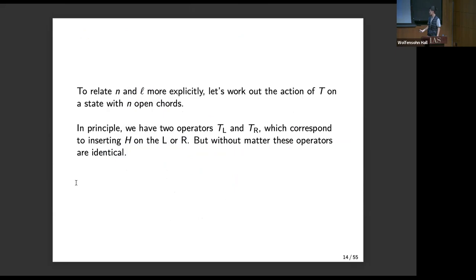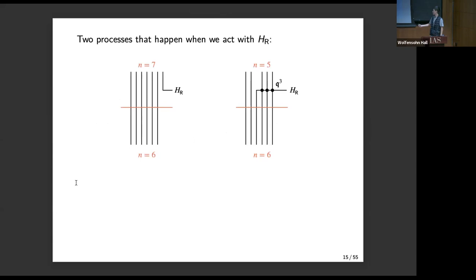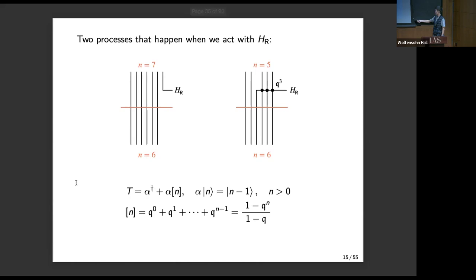To make this more explicit, we work out the specific form of the transfer matrix T. In principle we have two operators — the left Hamiltonian and the right Hamiltonian — but without matter they are identical, so we consider the action of the right Hamiltonian. The right Hamiltonian can either create a chord or annihilate a chord. If it creates a chord, that's accounted for by alpha-dagger. If it annihilates a chord, it can annihilate through different numbers of existing chords, giving a sum that produces what's known as a q-deformed integer: (1 - q^n)/(1 - q). That's the expression for the transfer matrix. By solving it, as Berkooz and company did, you can work out the partition function and more properties of the system.